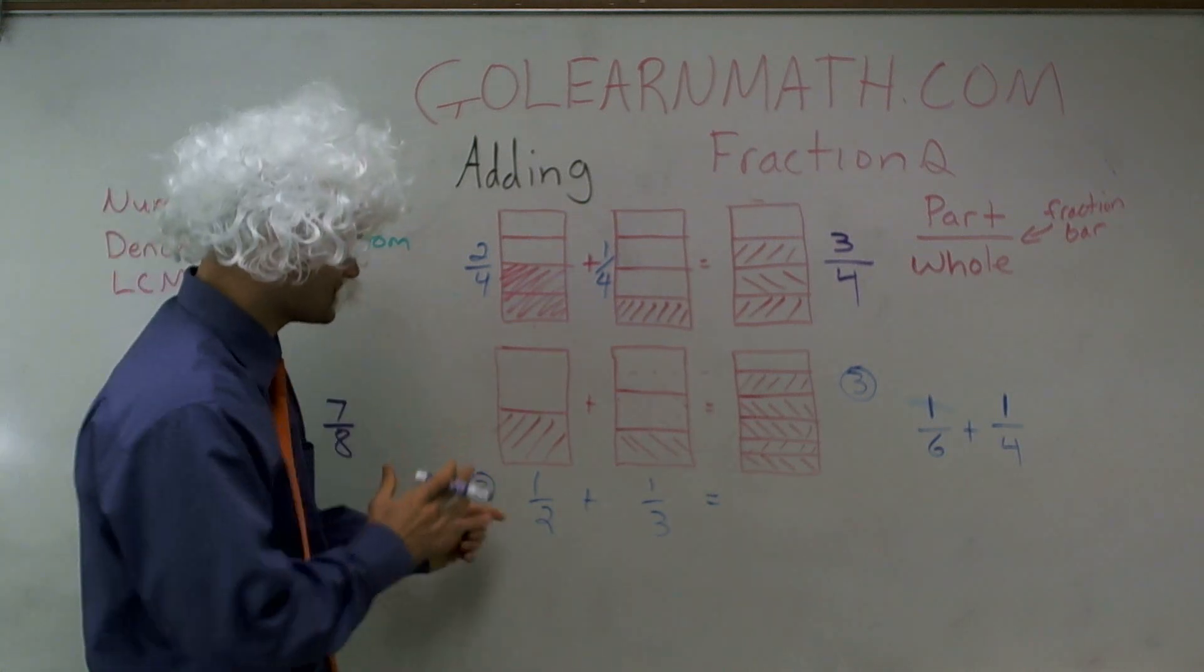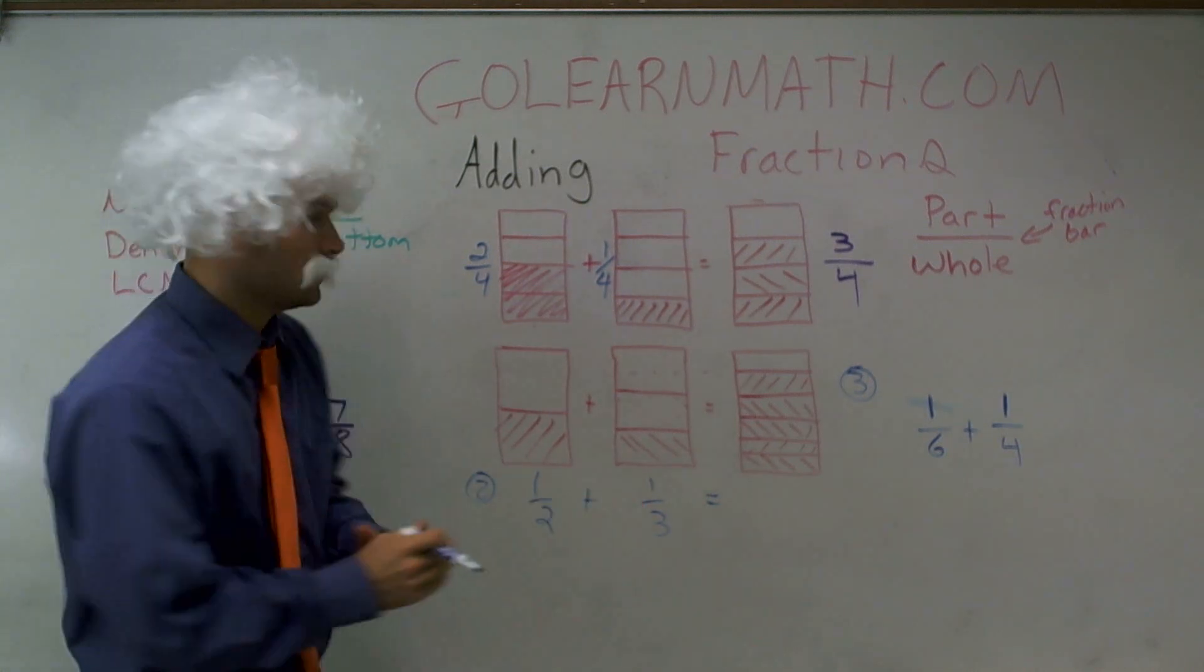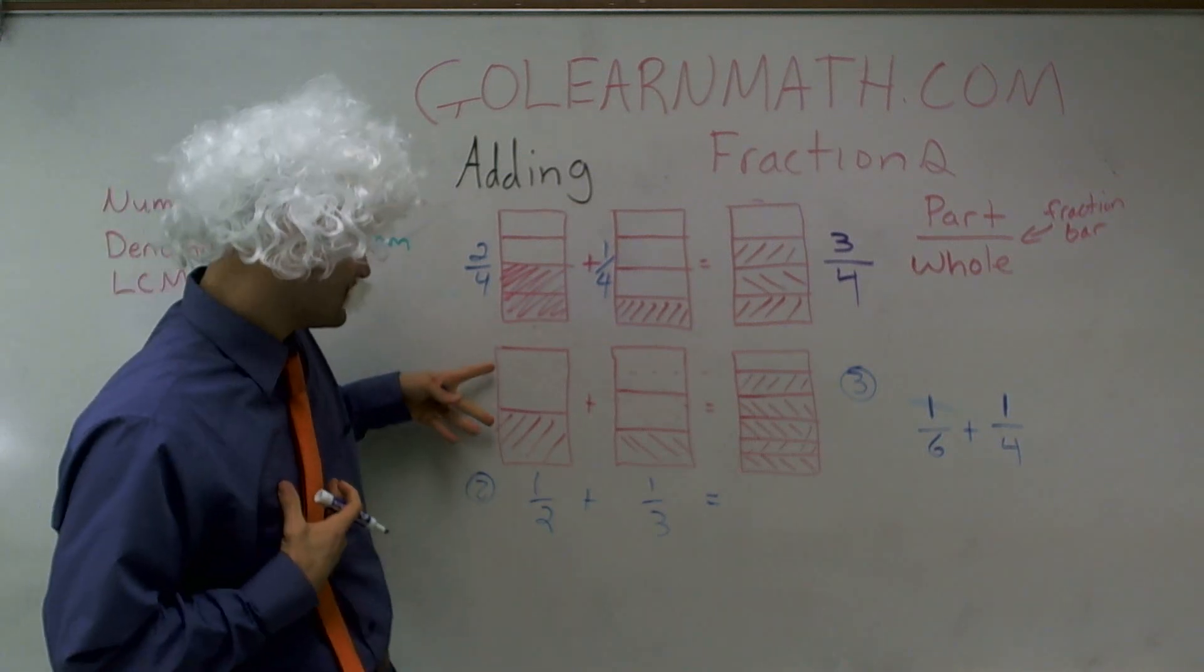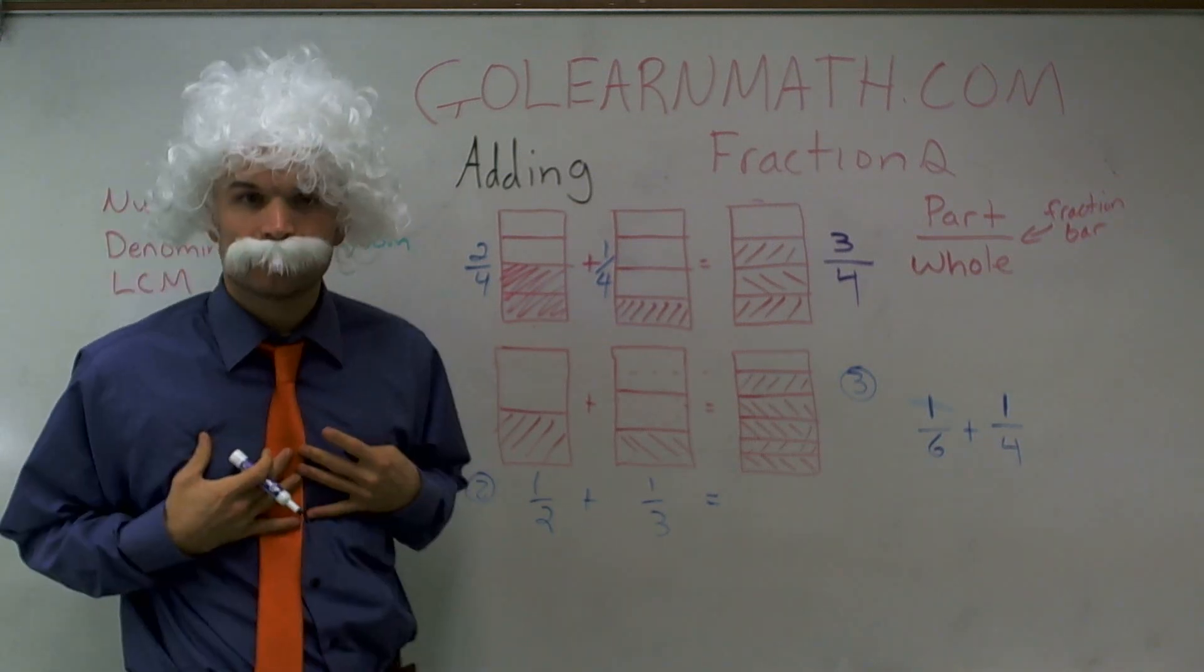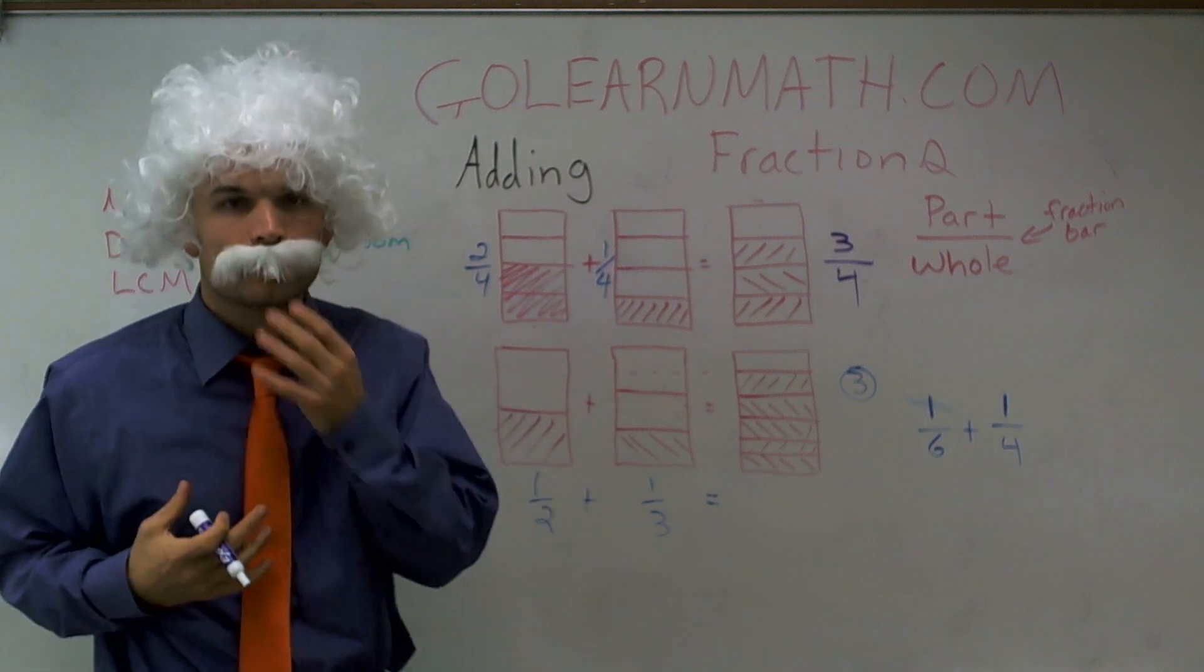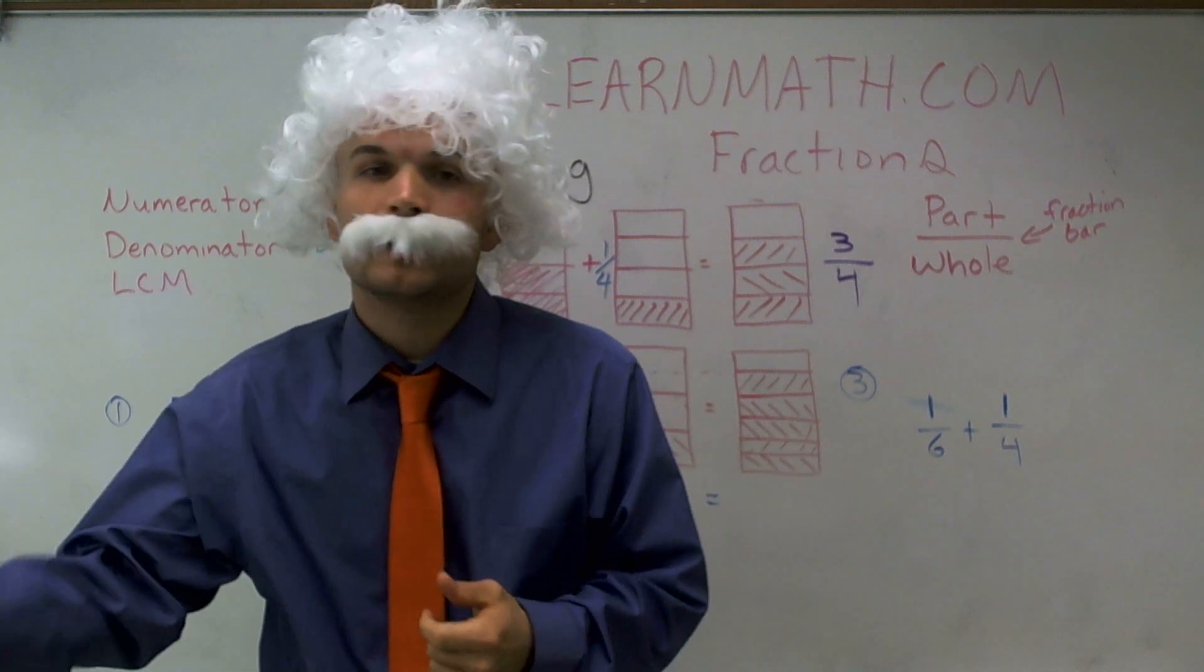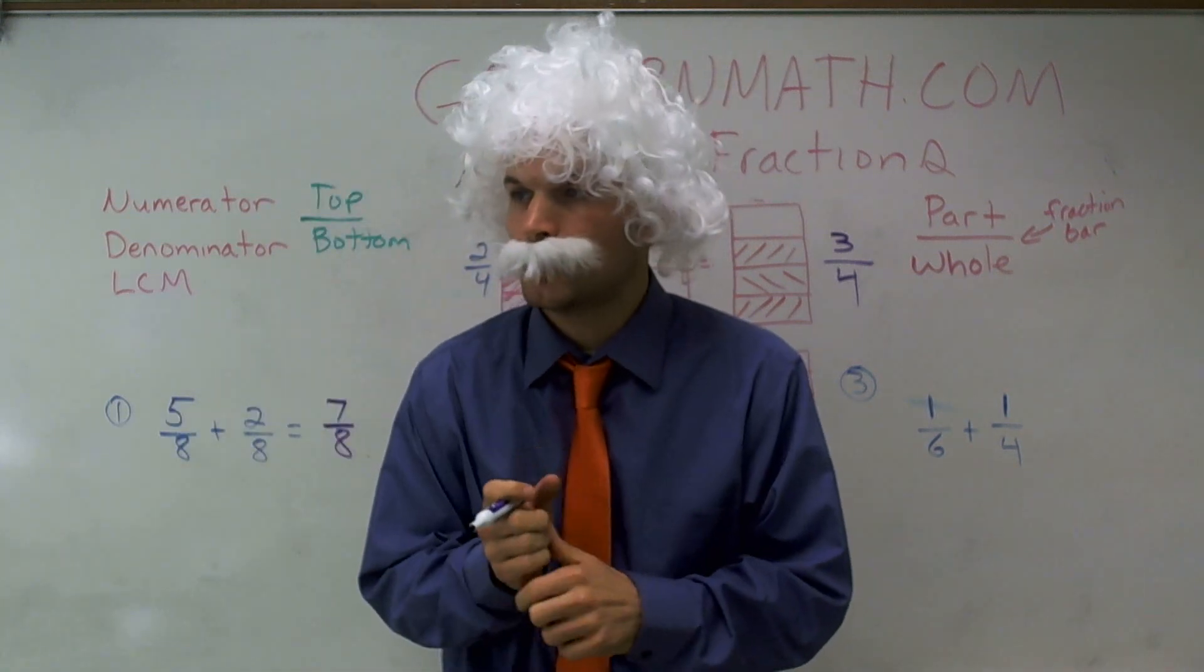Now, let's take a look at what happens when our denominators are not the same. So I drew up two more candy bars. Let's say I have one half of my candy bar, and then another friend has a third of a candy bar. So they broke their candy bar up into thirds, and now they give me one third of a candy bar.